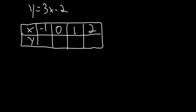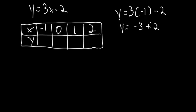Now I'm going to input each of these numbers into our function. So y equals 3 times negative 1 minus 2. That gives us y equals negative 3 minus 2, or negative 3 plus negative 2, which equals negative 5. So our first output is negative 5.